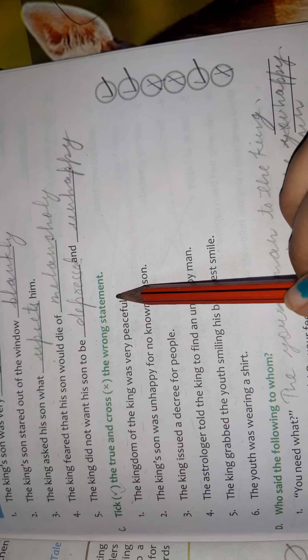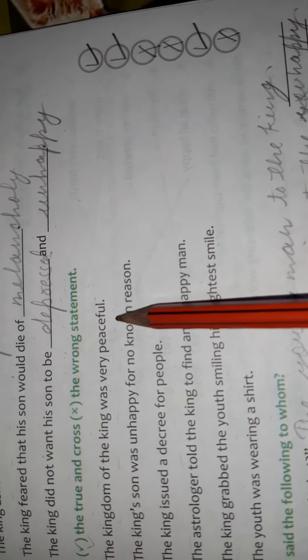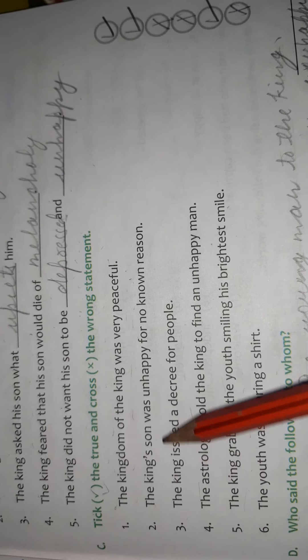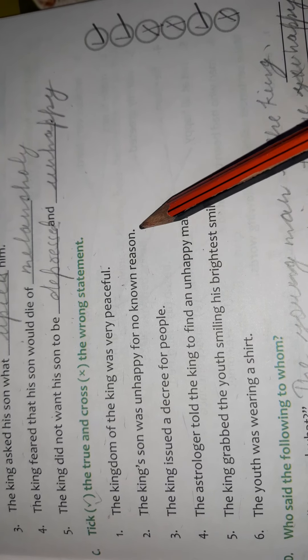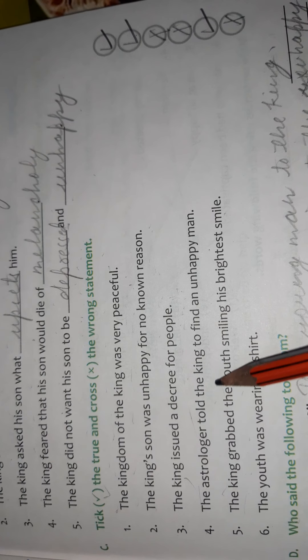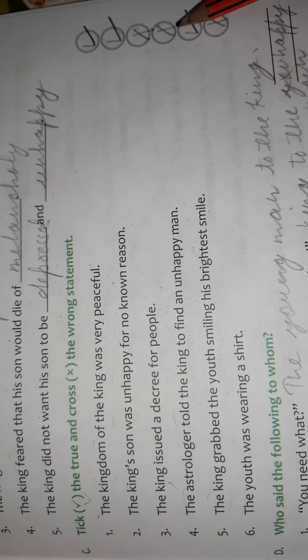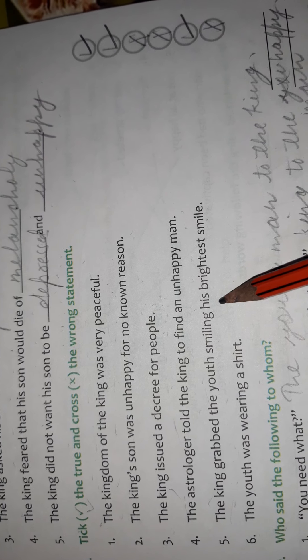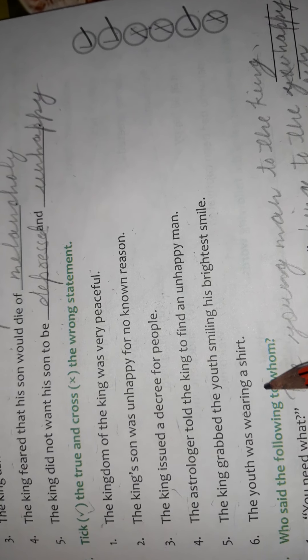Next, tick the true and cross the wrong statements. First: the kingdom of the king was very peaceful — yes, this is correct. The king's son was unhappy for no known reason — yes, correct. The king issued a decree for people — no, this is incorrect; it was for wise men, astrologers, and physicians, not for people. The astrologer told the king to find an unhappy man — no, to find a happy man, so cross it. The king grabbed the youth smiling his brightest smile — yes, correct. The youth was wearing a shirt — no, he was wearing only a jacket and inside there was no shirt, so cross it.